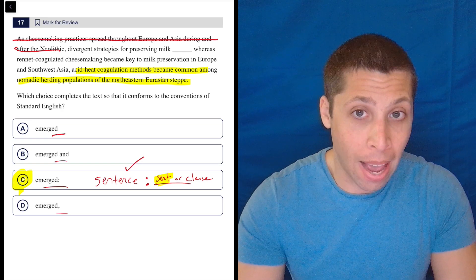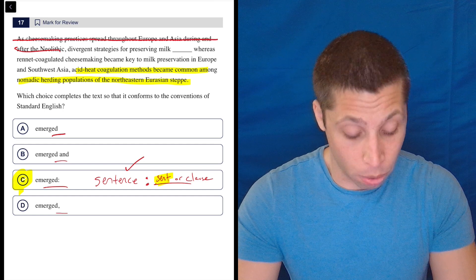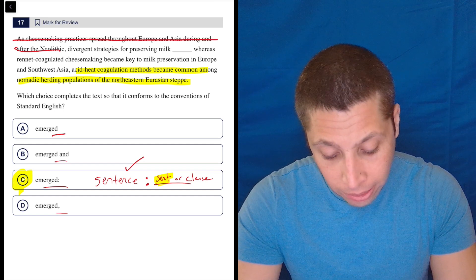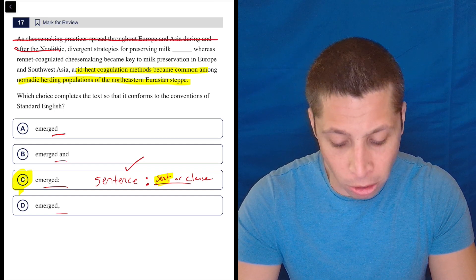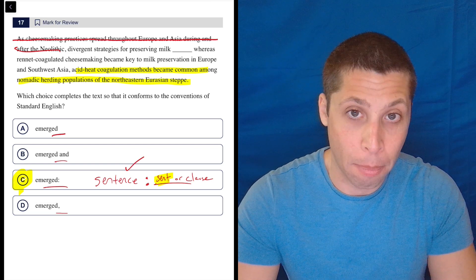But they're doing it at the front. Now, if I were putting it at the front, I would do something more like 'although' - although rennet coagulated cheesemaking became key in Europe and Southwest Asia, acid heat coagulation became common in the Eurasian steppe.